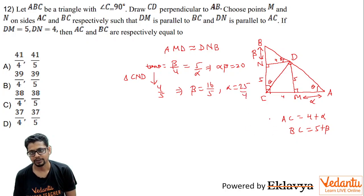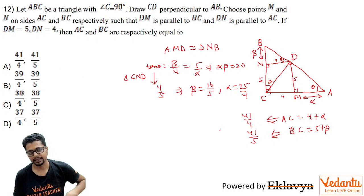As simple as that. So what about AC? AC is 25 by 4 plus 4, so you get 41 by 4. What about BC? 16 by 5 plus 5—that's 41 by 5. So here, A is the answer. Thanks for listening.